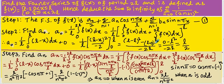We get minus L² divided by 2L, and minus of minus becomes plus, so a0 equals L divided by 2.